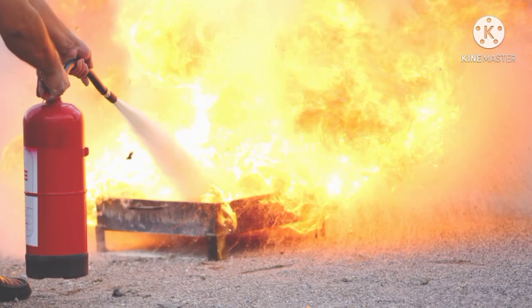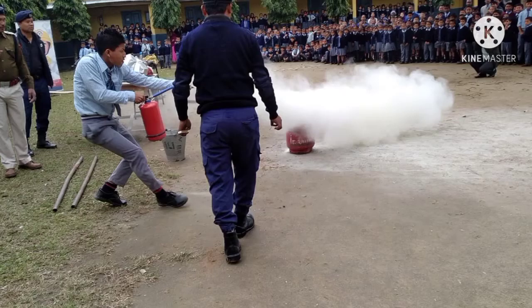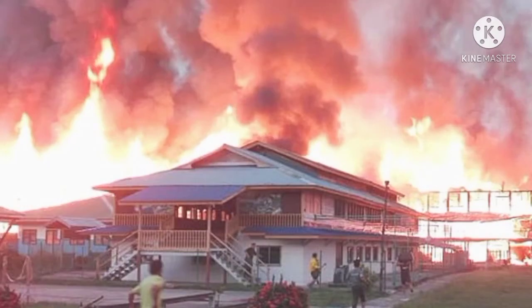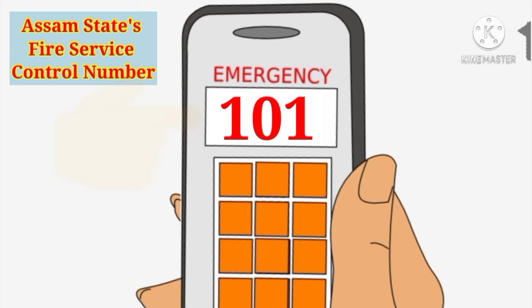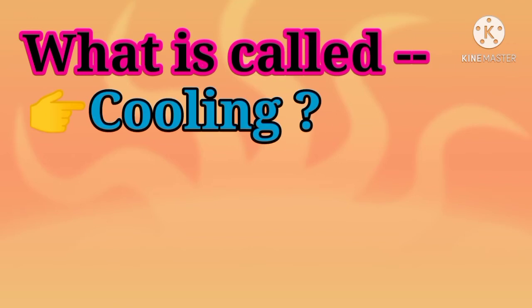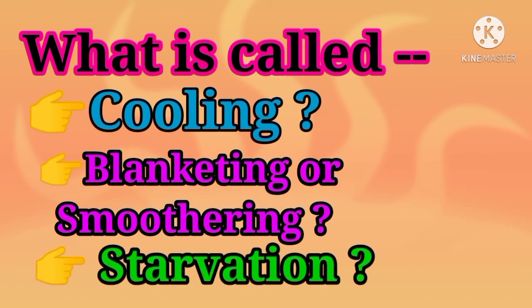But if you are unable to control or extinguish the fire during the initial stage and the fire spreads rapidly, then don't take any risk and don't try to extinguish the fire alone. Immediately call your nearest fire service by dialing their respective phone numbers or your state's fire service control number. Here the question arises: what is cooling, blanketing, and starvation?